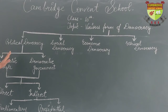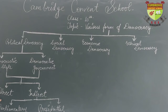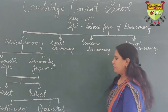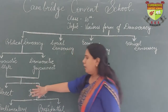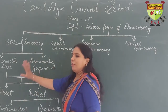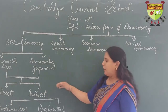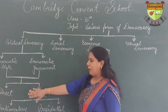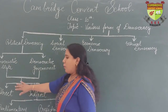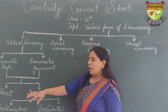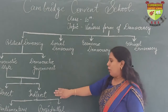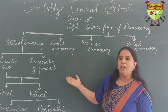Political democracy is further divided into two parts: direct democracy and indirect democracy. In direct democracy, the rule of the public is direct — the public makes the law and follows the law. There is no representative, but this type of democracy is not possible in a large area or a highly populated country. So indirect democracy is more popular, and it is also known as representative democracy.